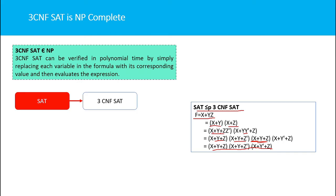This resulting boolean formula is in CNF form, so we can reduce a satisfiability problem to 3CNF form in polynomial time. Therefore, the 3CNF SAT problem is NP-hard. Since we also proved it is an NP problem, we conclude that 3CNF SAT is an NP-complete problem.